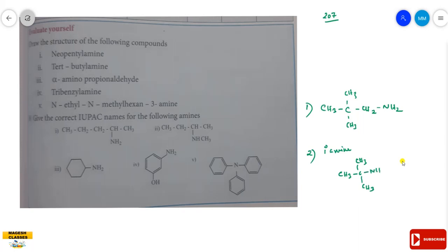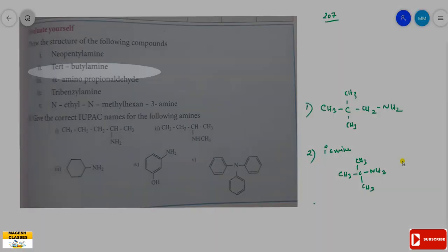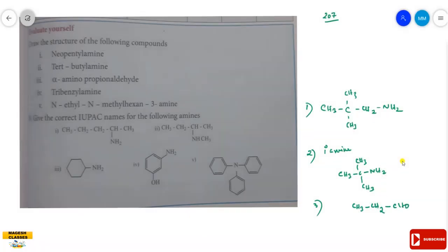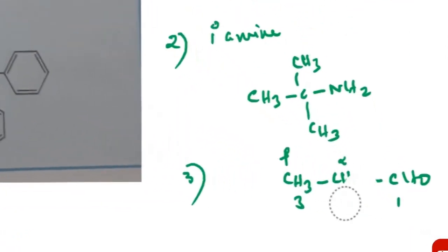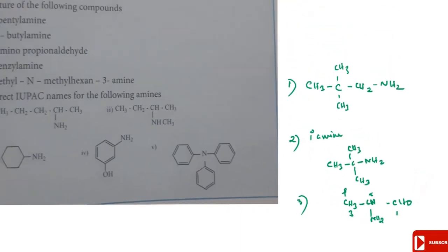The third one is alpha-aminopropionaldehyde. Propionaldehyde has three carbon atoms and one aldehyde group; the carbonyl group is always on the first carbon. The alpha carbon is the carbon to which the functional group is attached. So position 1 is the aldehyde, position 2 is alpha, and position 3 is beta. At the alpha position, one amino group (NH₂) is attached in place of one hydrogen atom.